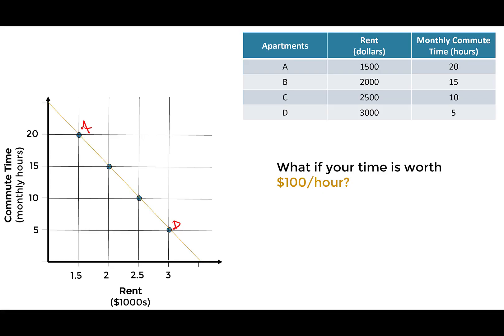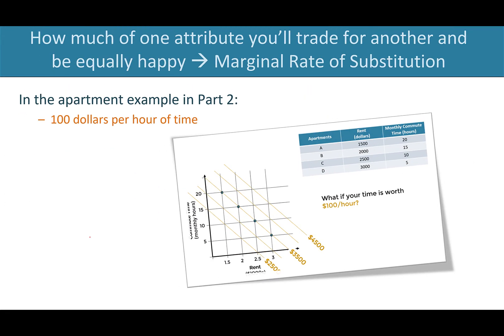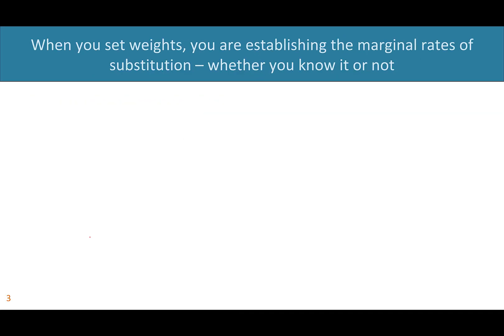We saw how you could graphically represent this as a slope on the graph. As you moved from top right to bottom left — because you're trying to minimize commute time and trying to minimize rent — you got better alternatives on the graph. Building on this, just know that when you set your weights, you are establishing the marginal rates of substitution, whether you know it or not.